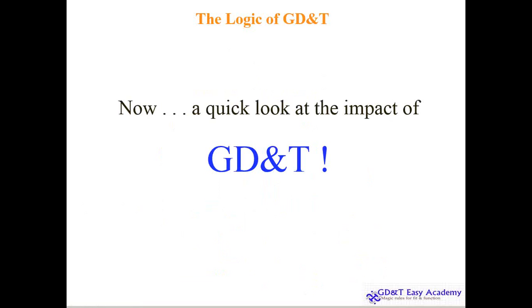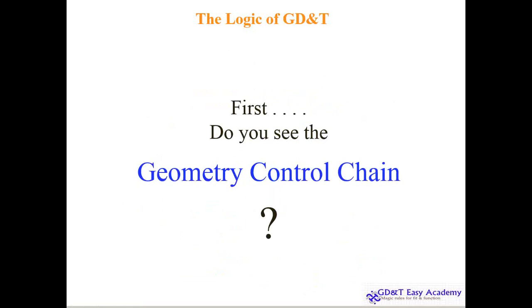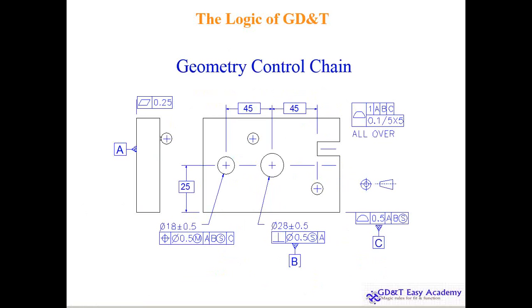A quick look at the impact of GD&T now. First, do you see the geometric control chain? This is the geometric control chain which I've shown you just before, with different areas like the basic dimensions and geometry with the tolerance, and geometric dimensions and tolerances. I'll discuss about the SME within a minute.